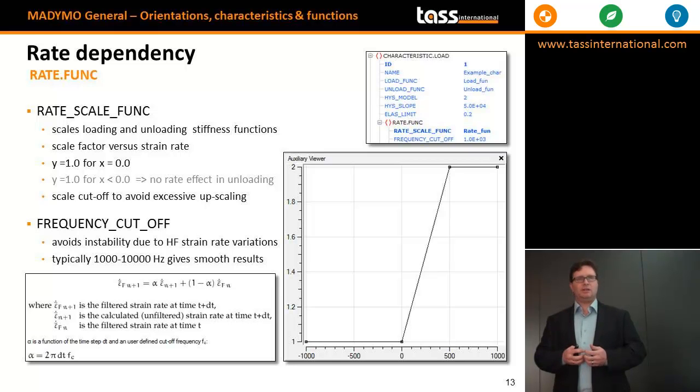The rate dependency can be altered a bit by two different attributes. One is the rate scale func, and the other one is the frequency cutoff. The rate scale func is used to scale the loading and unloading functions as a function of a strain rate.